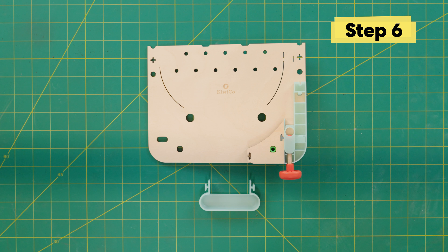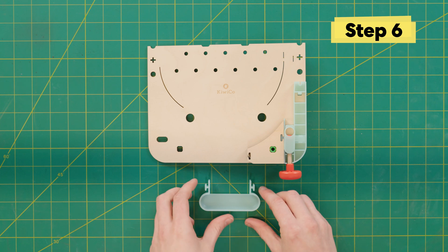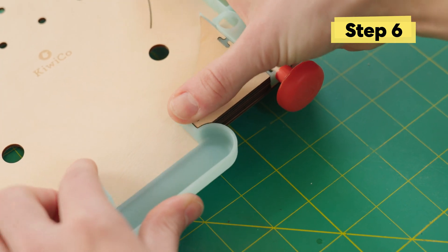Next let's install the ball catch. So kind of the same thing, we're going to line up that nub on the right side with the nub on the wood piece.